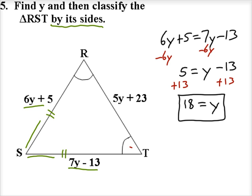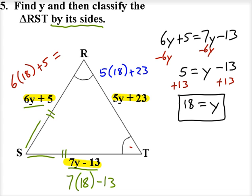Substituting y equals 18 for these three sides: 6y, which is 6 times 18 plus 5, that's 113. And 7y minus 13, which is 7 times 18 minus 13, is also 113.